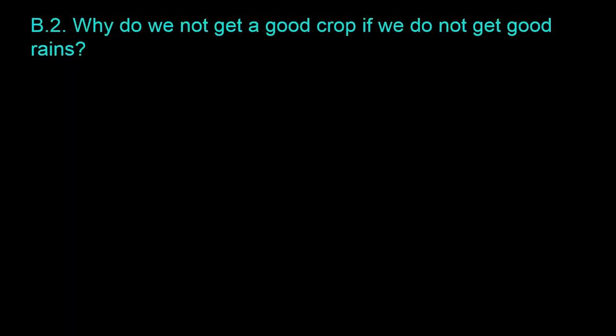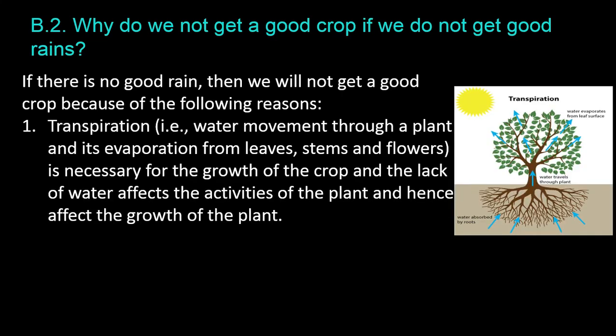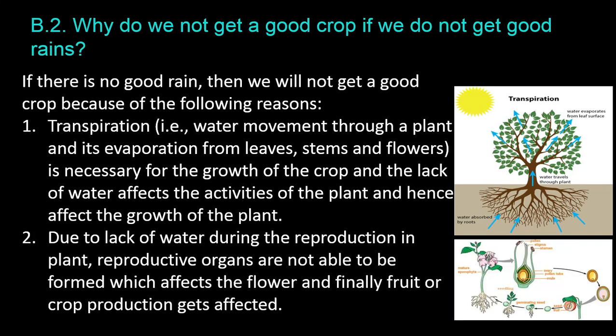Question B.2: Why do we not get a good crop if we do not get good rains? If there is no good rain, we will not get a good crop because of the following reasons. 1. Transpiration — that is, water movement through a plant and its evaporation from leaves, stems, and flowers — is necessary for the growth of the crop, and the lack of water affects the activities and growth of the plant. 2. Due to lack of water during reproduction in the plant, reproductive organs are not able to form, which affects the flower and finally fruit or crop production.